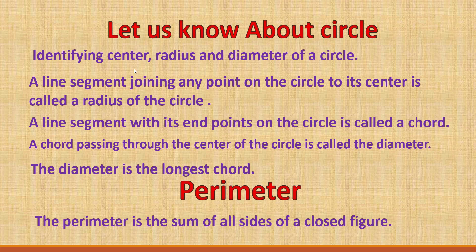Identifying the center, radius, and diameter of a circle. A line segment joining any point on the circle to its center is called the radius of the circle. A line segment with its endpoints on the circle is called a chord.